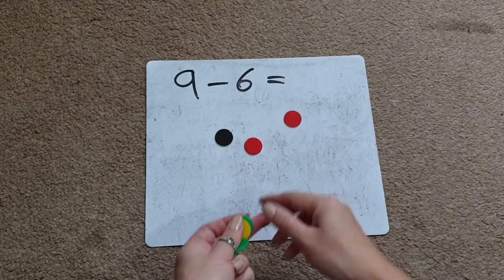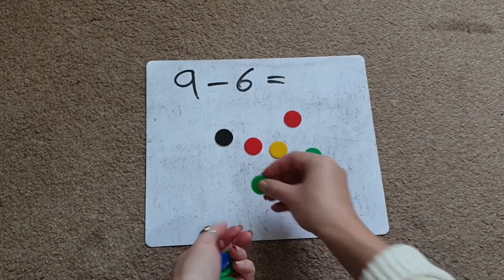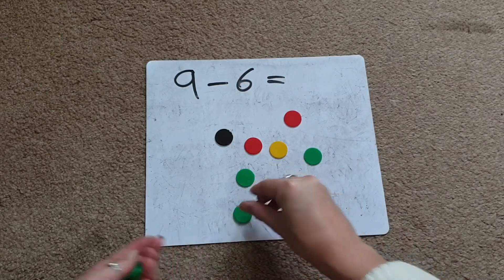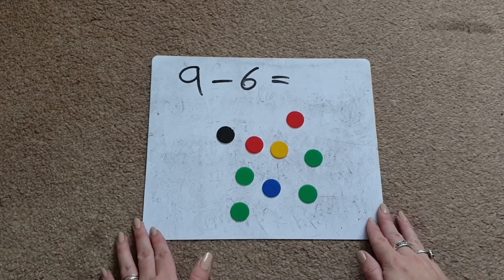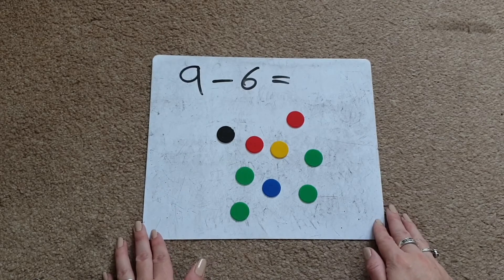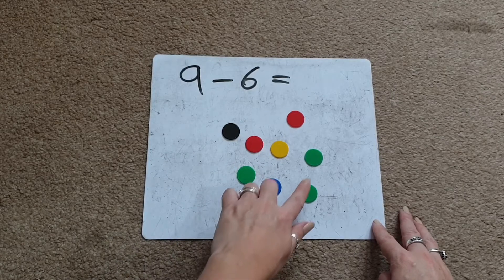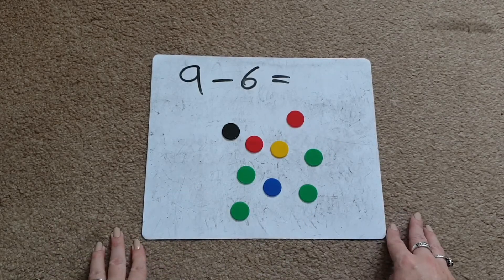So we're going to count out 9 objects, as that's the biggest number, that's the number we're starting with. 1, 2, 3, 4, 5, 6, 7, 8, 9. And then I usually always get the children to check that they do actually have the correct number they're starting with, making sure that they're touching each object as they count it, so they've not missed anything.